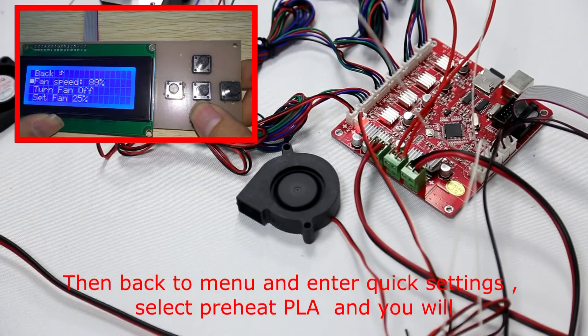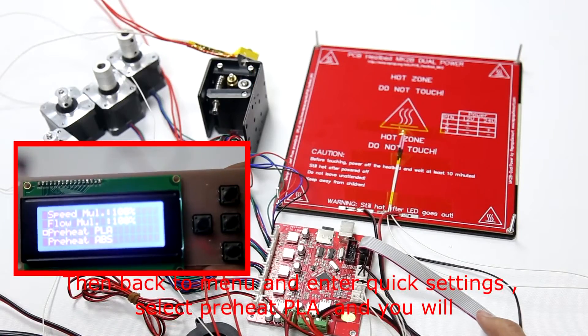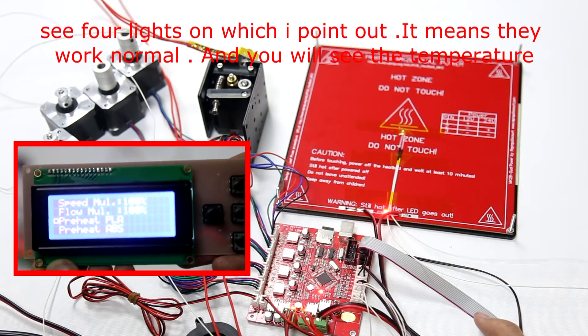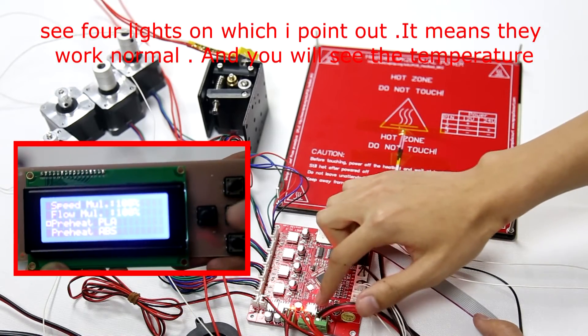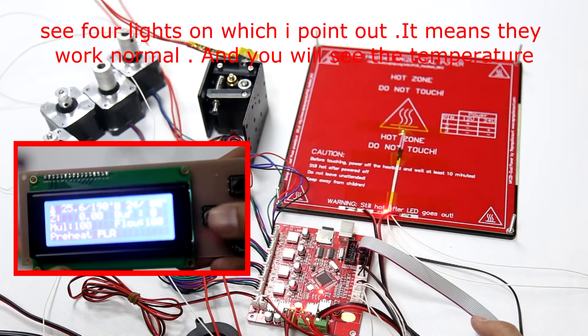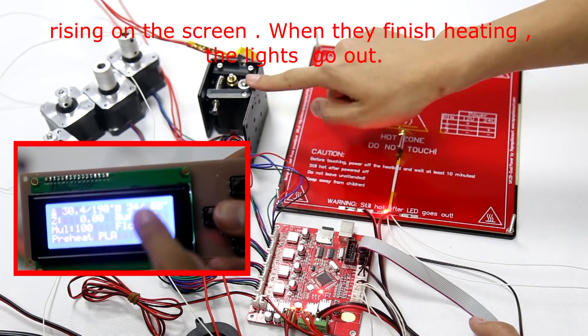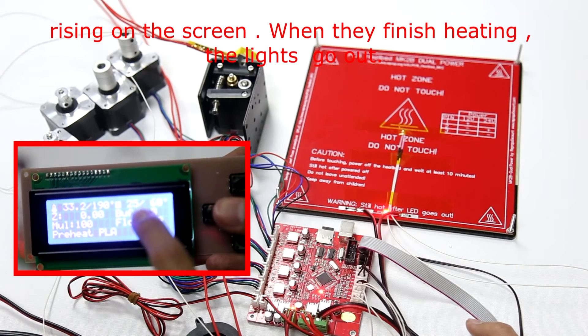Then back to menu and enter quick settings. Select preheat PLA and you will see four lights on, which means they work normally. You will see the temperature rising on the screen. When they finish heating, the light goes out.